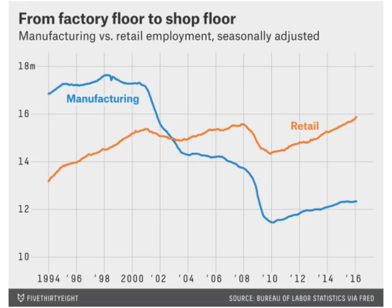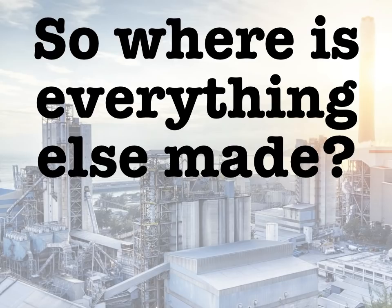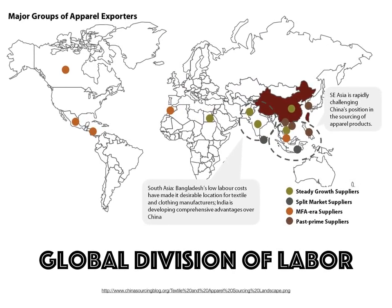We're still making high-tech things, not by hand but by automation and robots. This brings us to the global division of labor. It explains where a lot of manufacturing and production takes place. A map of textile or apparel manufacturing shows that a lot has been offshored or outsourced — some to Latin America, but a lot to Asia: Southeast Asia, South Asia, India, Bangladesh, China, Vietnam, Malaysia, and others.